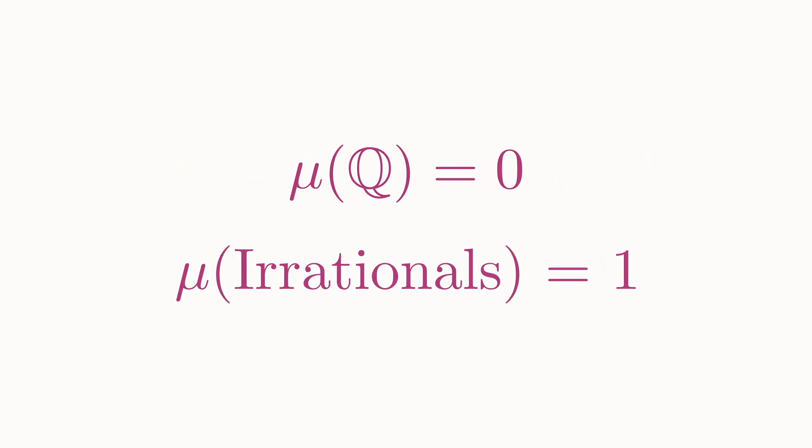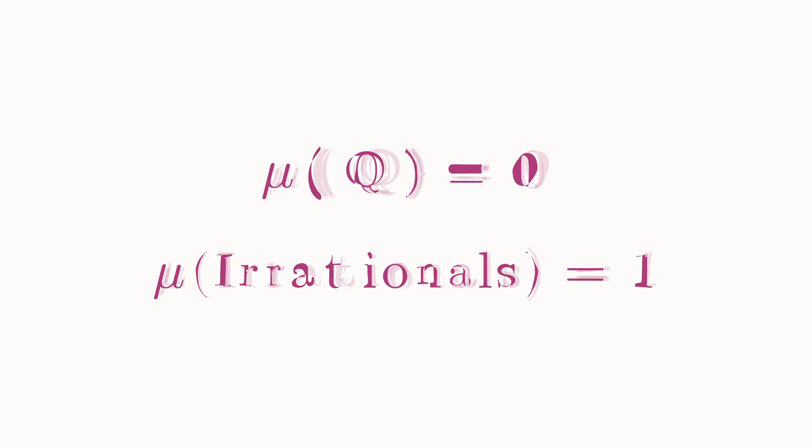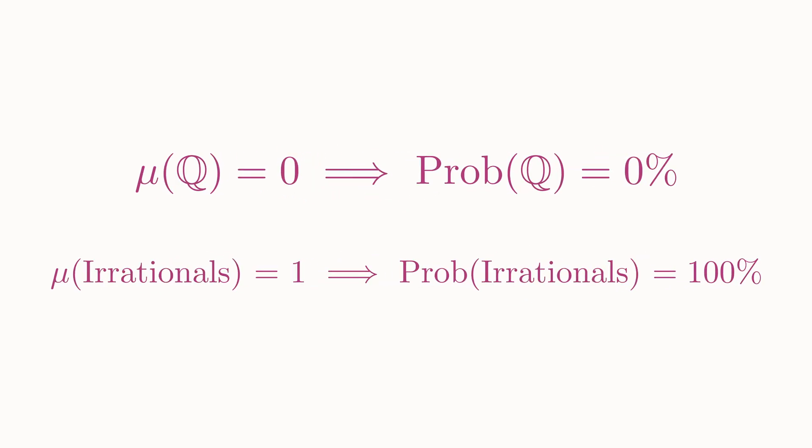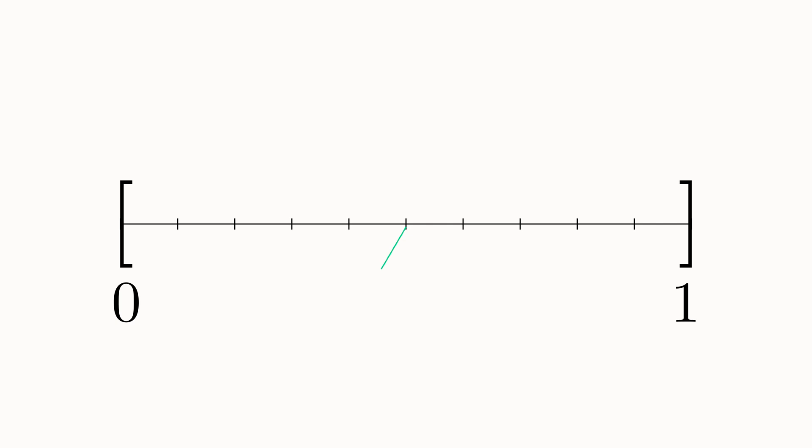Second, since the measure of the rationals is 0, and the measure of the irrationals is 1, the probability of hitting an irrational number is 100%, and the probability of hitting a rational is 0%. So the probability of hitting any particular number in the interval is the same as hitting the entire set of rationals. Both are 0. Interestingly though, since the rational numbers are dense in the reals, you will always be arbitrarily close to a rational number no matter where you land.